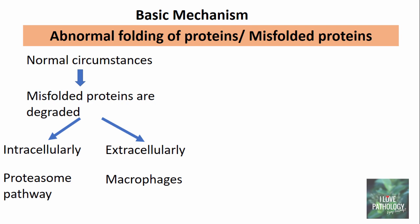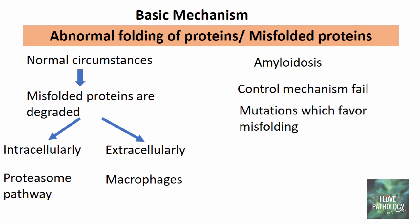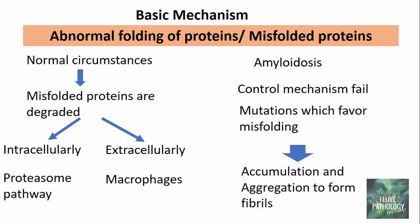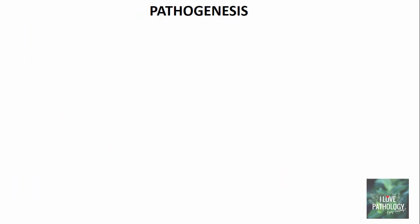Extracellularly, these misfolded proteins are degraded by macrophages. In amyloidosis, the control mechanisms fail — either because of faulty proteasome pathways, abnormalities in the macrophages, or mutations which favor misfolding. Once the control mechanisms fail or mutations favor misfolding, there is accumulation and aggregation, which results in the formation of fibrils. That covers the basic mechanism.